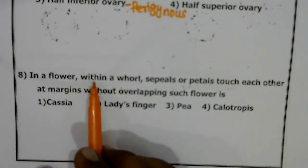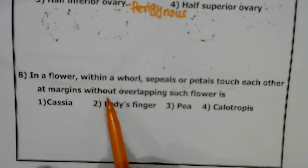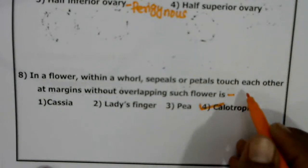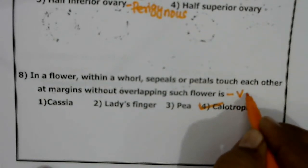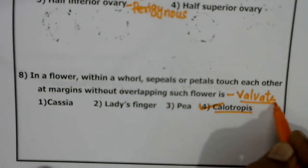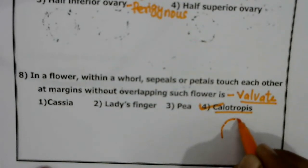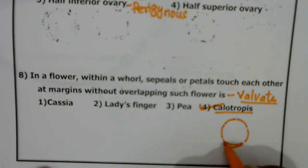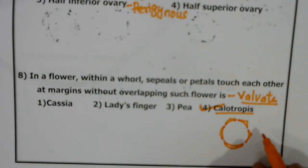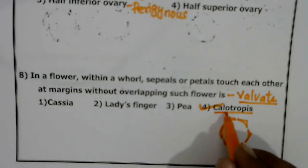In a flower, within a whorl, when sepals or petals touch each other at the margins without overlapping, such a flower shows valvate aestivation. This is seen in Calotropis. In Calotropis, valvate aestivation is present where the margins touch one another. The example for valvate aestivation is Calotropis.